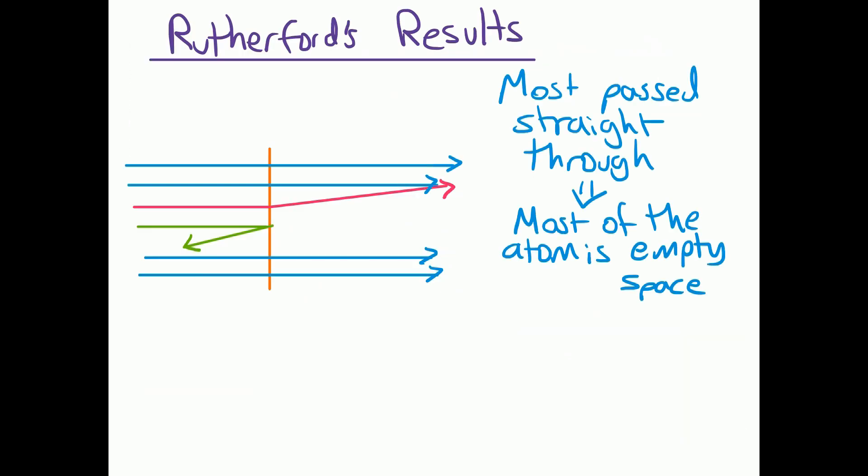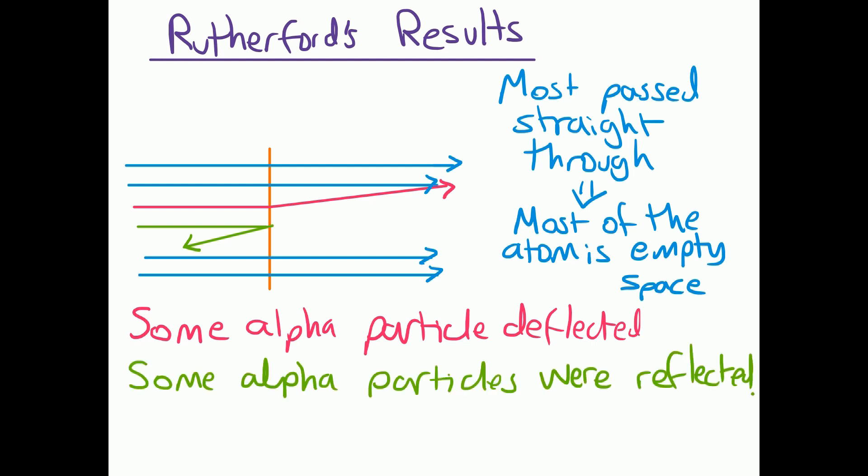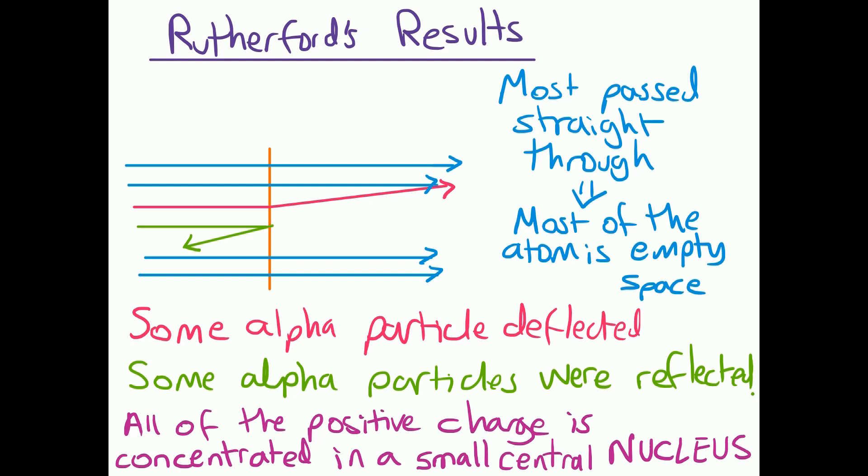So the results that Rutherford got was that most alpha particles passed straight through the thin gold foil as he expected, and that told him that most of the atom is empty space. However, he also noticed a very small number of alpha particles were deflected of course, and some alpha particles were even reflected. And that gave him the idea that the alpha particles must be hitting something very small and it must be something that's also positively charged for the alpha particles to bounce back or be deflected. So he came up with the idea that all of the positive charge is concentrated in a very small central nucleus in the center of the atom.